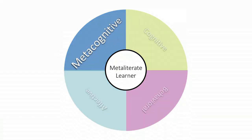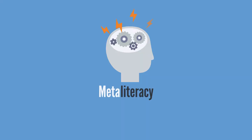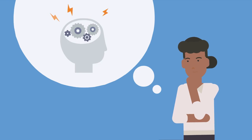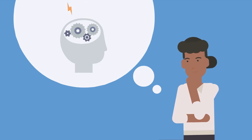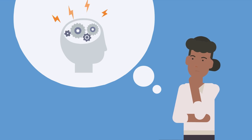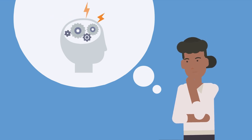The metacognitive domain reinforces an individual's ability to reflect and regulate their own learning pathway. The meta in metaliteracy intentionally aligns with the meta in metacognition, which is essentially thinking about one's own thinking. Through self-reflection, you can identify your own strengths and areas for improvement, which is valuable in any learning situation.